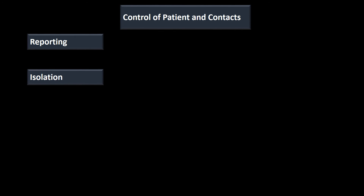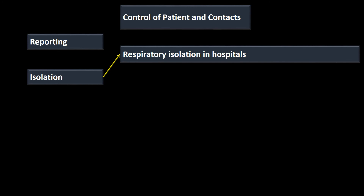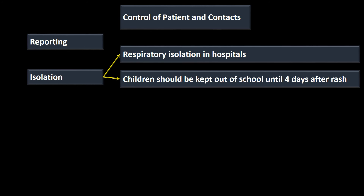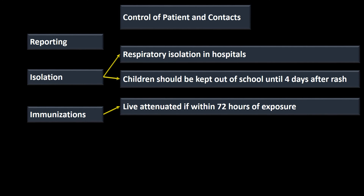Controlling patients and contacts: measles has mandatory reporting requirements in the United States and many countries, often within 24 hours to local public health authorities and the CDC. In the Navy and Marine Corps, this must be reported to the Navy Marine Corps Public Health Center in accordance with Technical Manual 6220.11. For isolation, anyone hospitalized with measles needs respiratory isolation, and children should be kept out of school until the fourth day after the rash onset, since that is when they are no longer contagious.